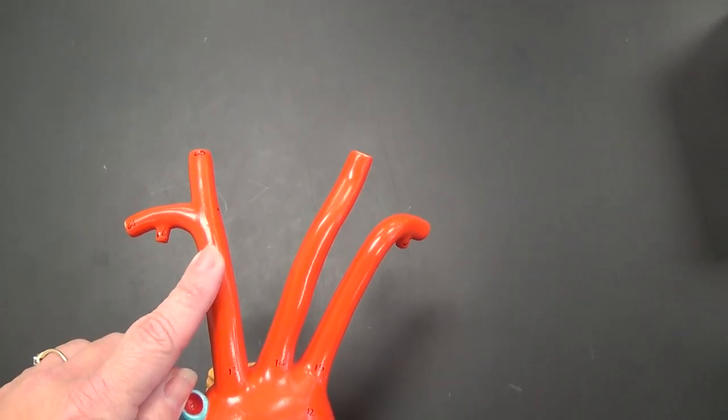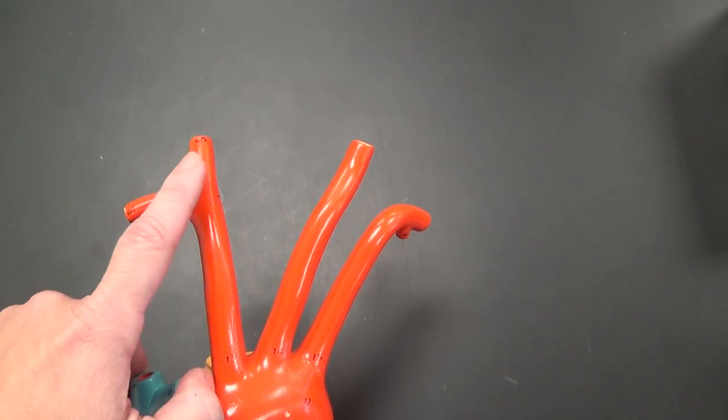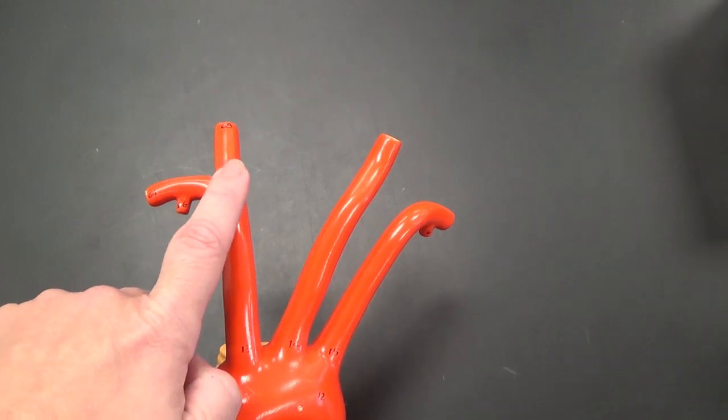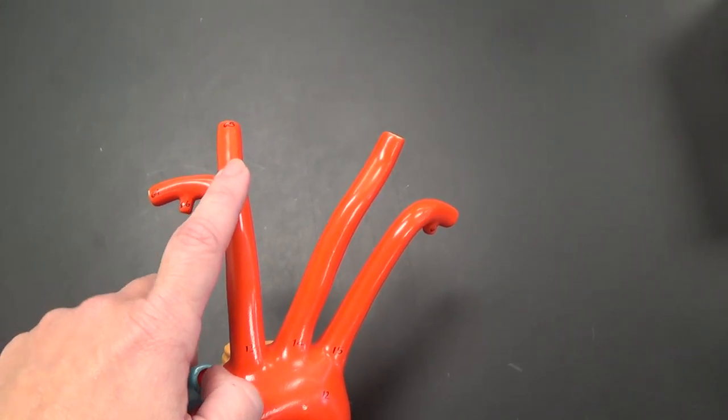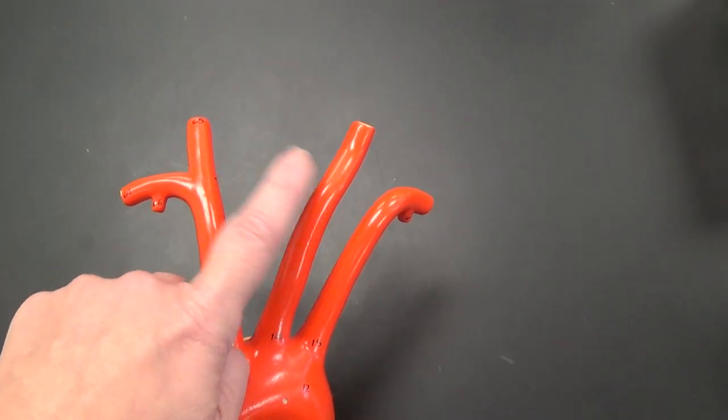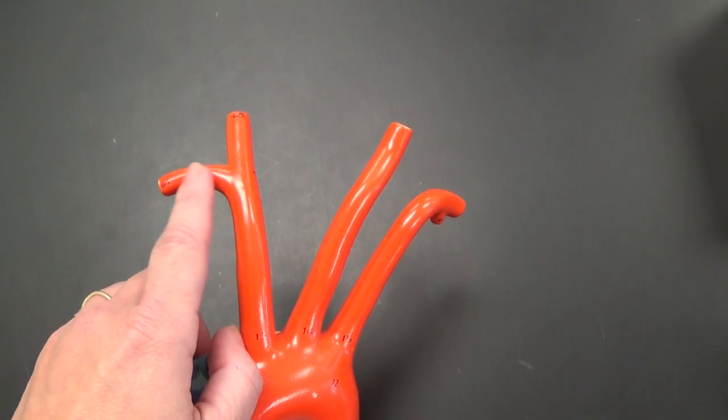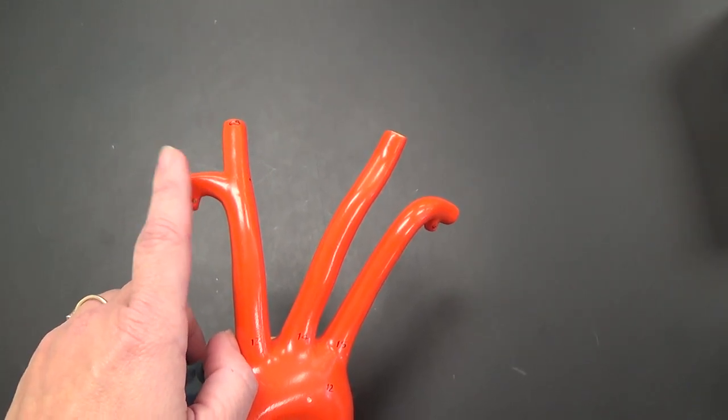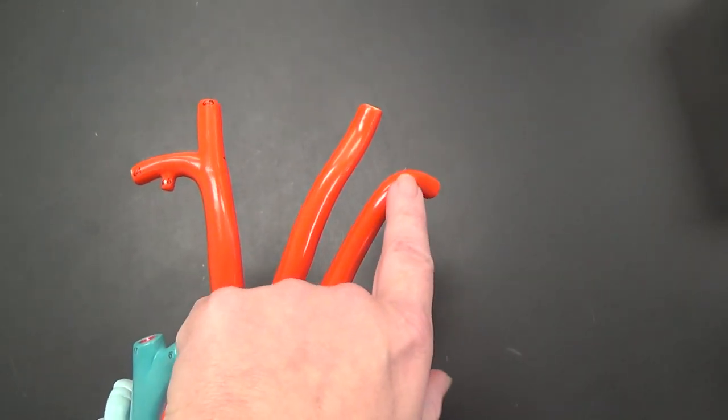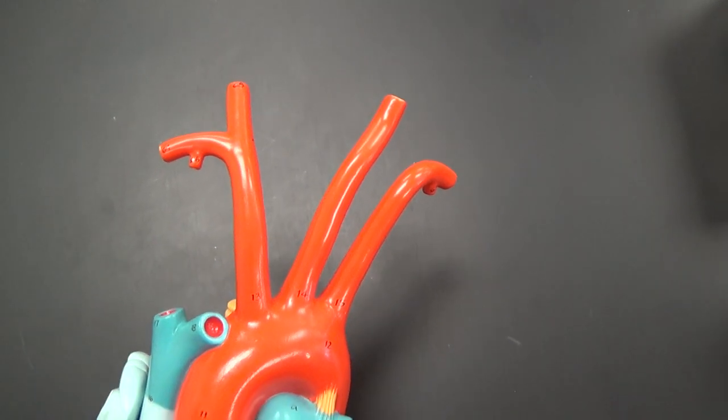If we go back to this brachiocephalic artery, brachio referring to arm, cephalic referring to head, we see a split on this right side. This blood vessel going up becomes the right common carotid. It'll be symmetrical with this one from this point forward. And then this blood vessel is turning to the side going to the arm. So this is the right subclavian artery, like the left one you have here. So right subclavian, left subclavian artery.